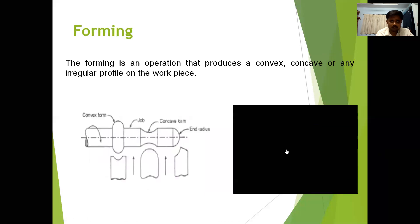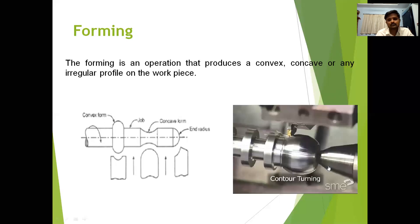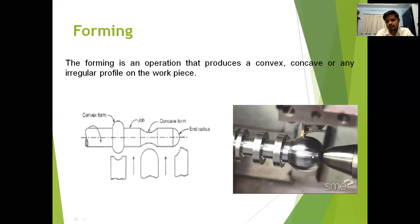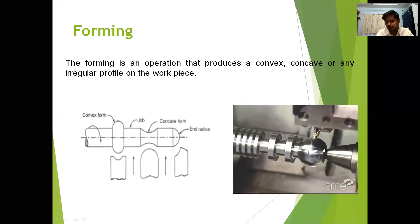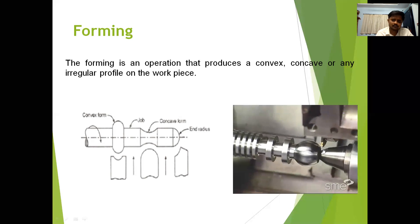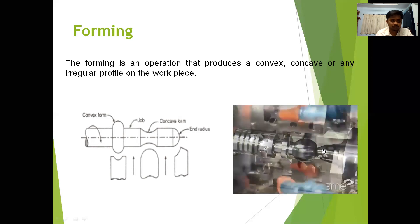Forming operation. Forming is an operation that produces a convex, concave or any irregular profile on the workpiece. If you want any convex, concave or irregular shape, first you have to select the appropriate cutting tool. If you want to perform any irregular profiles, that is called a forming operation. These are some examples of the forming operation — you can perform any shape on the workpiece using the lathe machine.